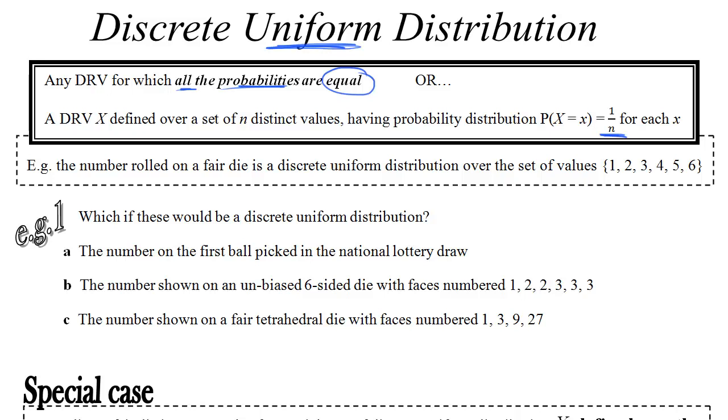So let's have a look at this example. Which of these would be described as a discrete uniform distribution? The first number picked on the national lottery draw. Well you've got I think 49 different outcomes and they're all equally likely. So yes, that would definitely be a discrete uniform distribution.